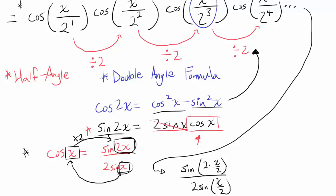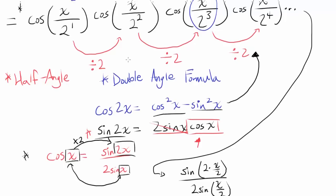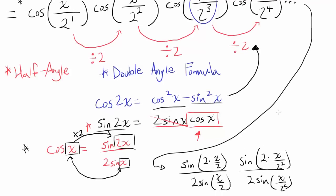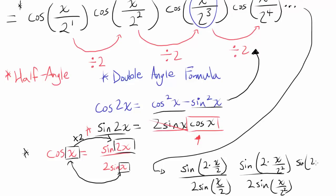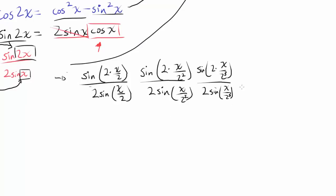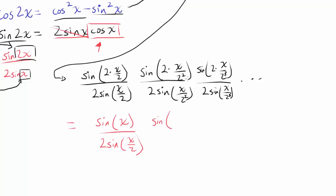Continuing: cosine of x over 2 squared becomes sine of 2 times (x/4) divided by 2 times sine of x/4, and cosine of x over 2 cubed becomes sine of (x/4) over 2 times sine of x/8. When we write out all these terms, we get sine x over 2 times sine(x/2), times sine(x/2) over 2 times sine(x/4), times sine(x/4) over 2 times sine(x/8).